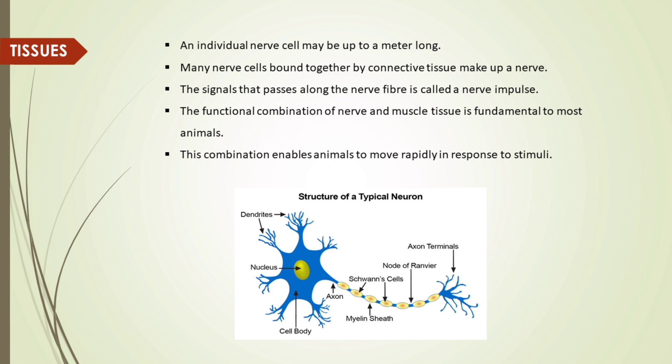The signal that passes along the nerve fiber is called a nerve impulse. The functional combination of nerve and muscle tissue is fundamental to most animals. This combination enables animals to move rapidly in response to stimuli.